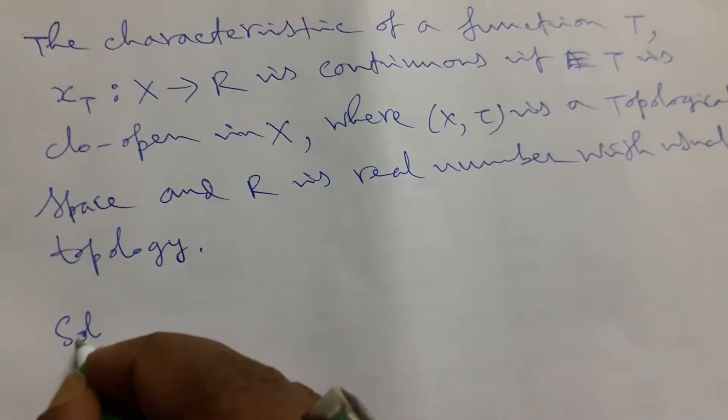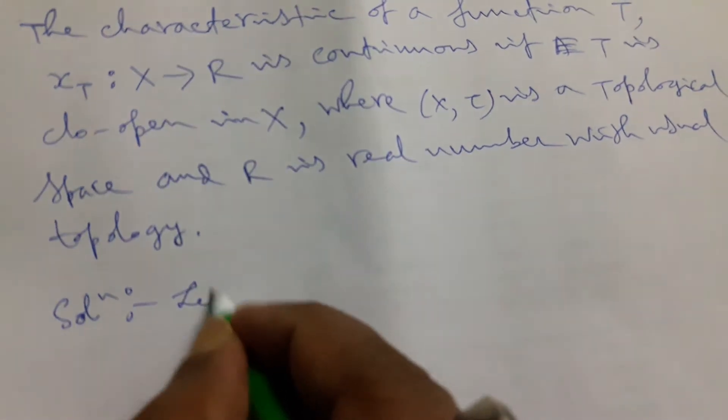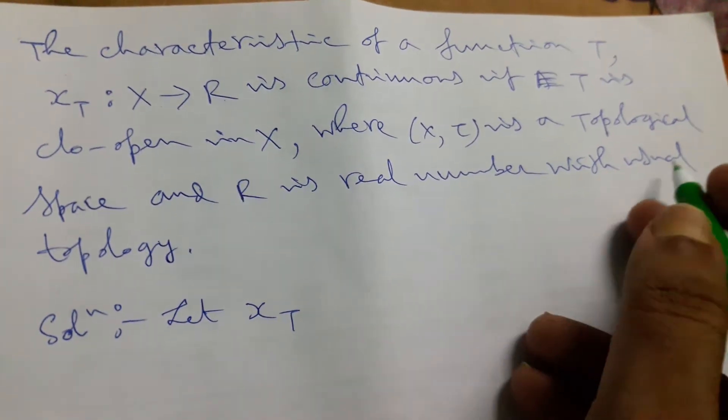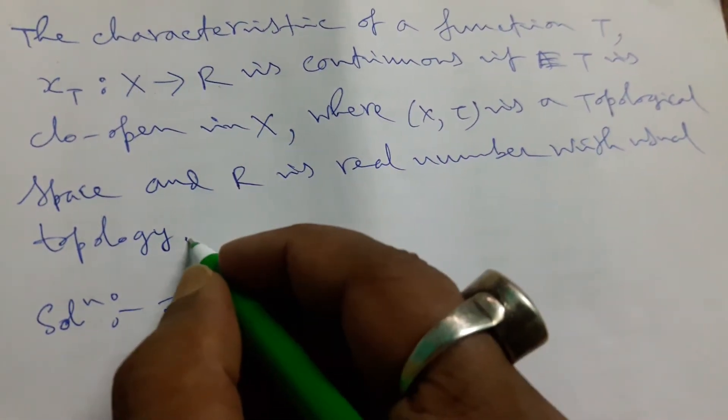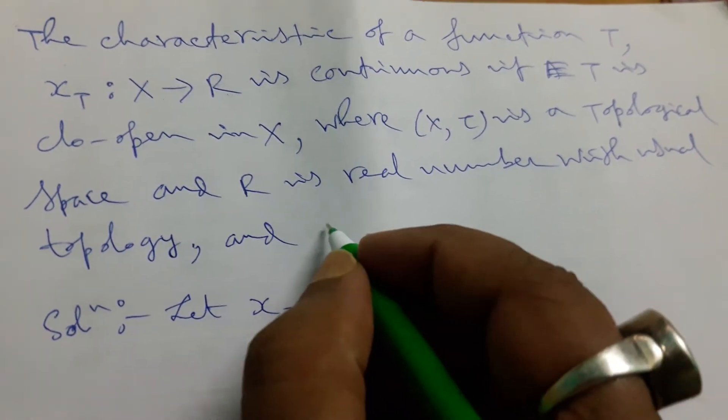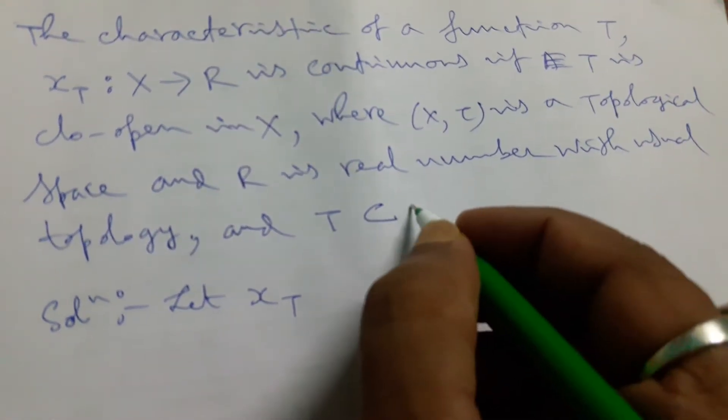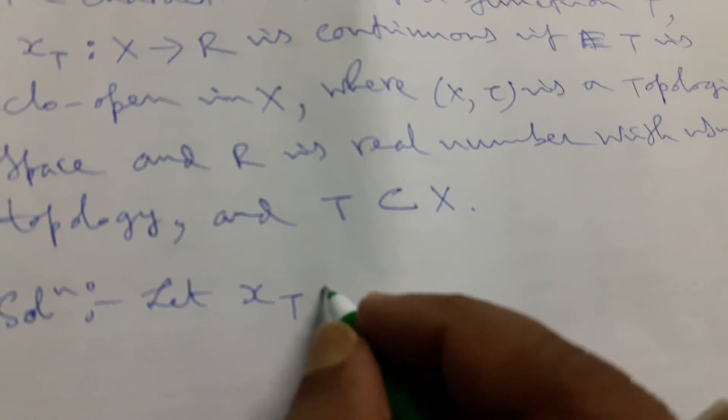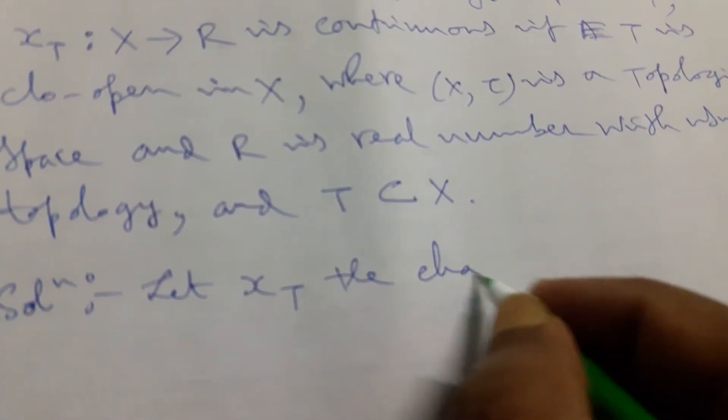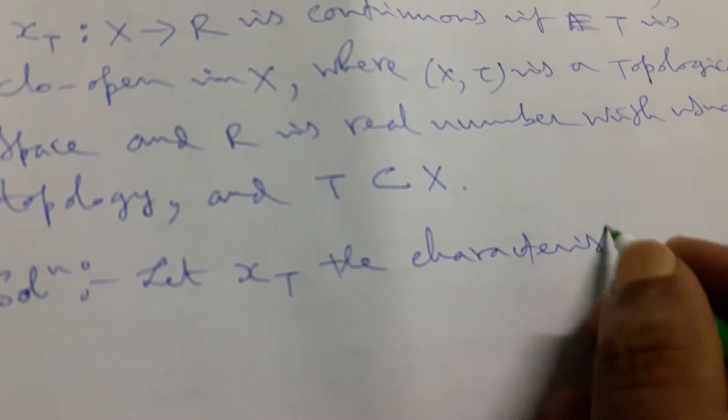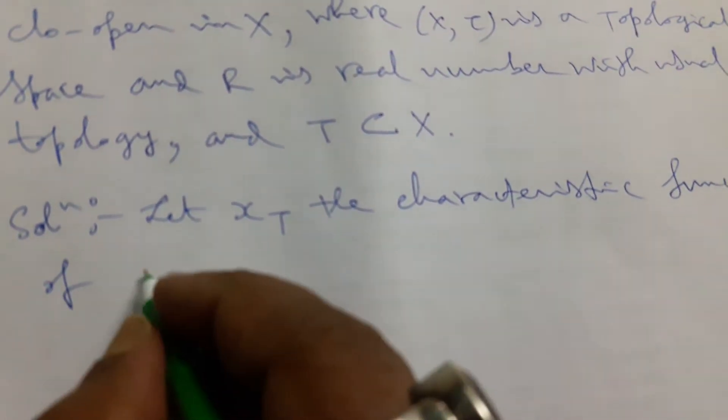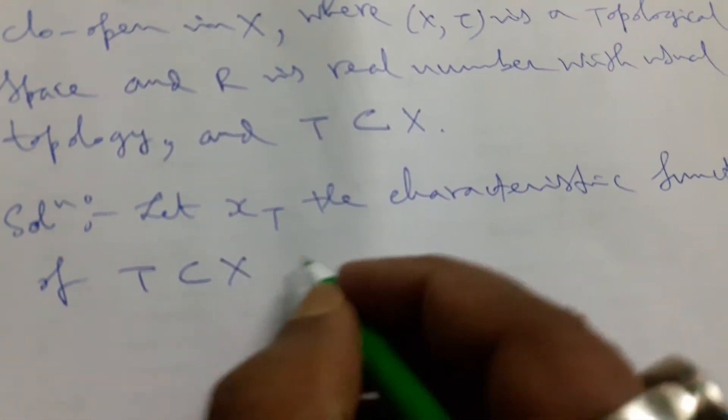Now let's start with the problem. Let χ_T, where T is also noticeable with usual topology, and this T is the subset of X. Let χ_T be the characteristic function of T, the subset of X, and so clearly